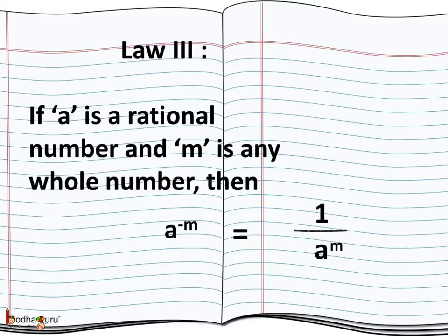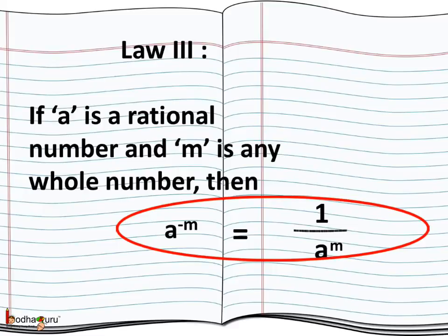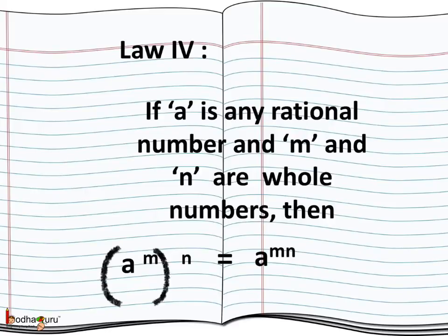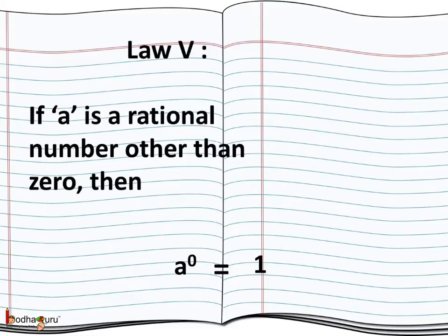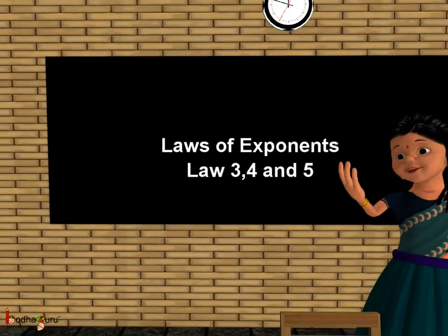All the rules we learnt are some of the laws of exponents. According to the third law, if a is a rational number and m is any whole number, then a to the power minus m is equal to 1 divided by a to the power m. According to the fourth law, if a is any rational number and m and n are whole numbers, then a to the power m to the power n simply means a to the power m multiplied by n, that is a to the power mn. And the fifth law says if a is a rational number other than 0, then a to the power 0 is equal to 1.